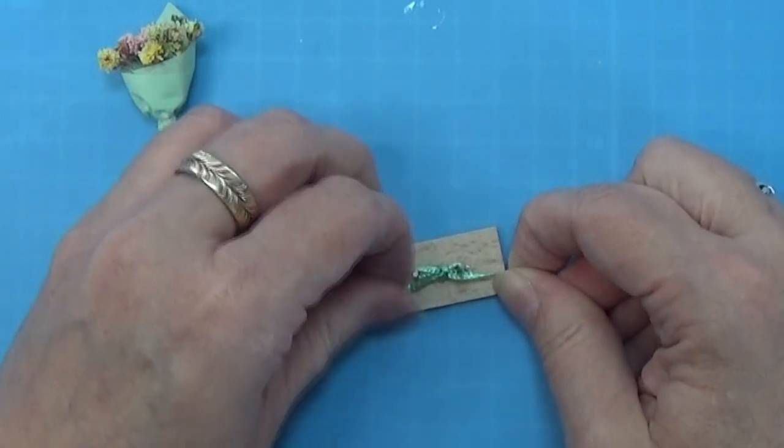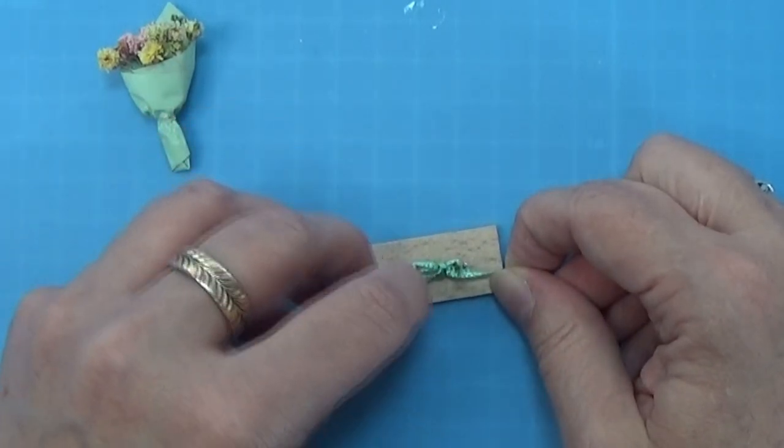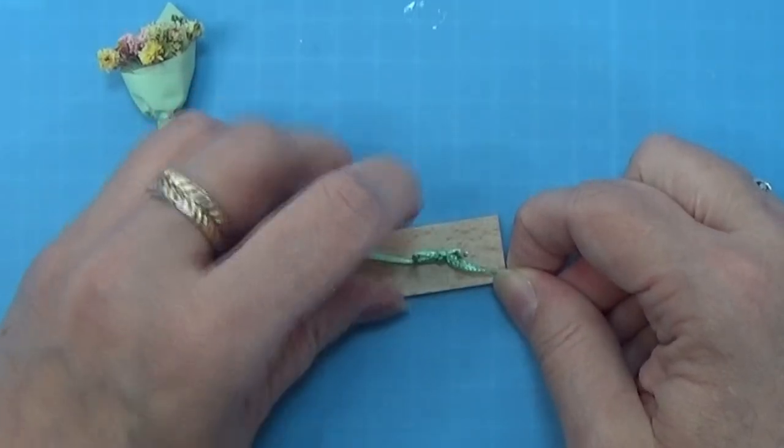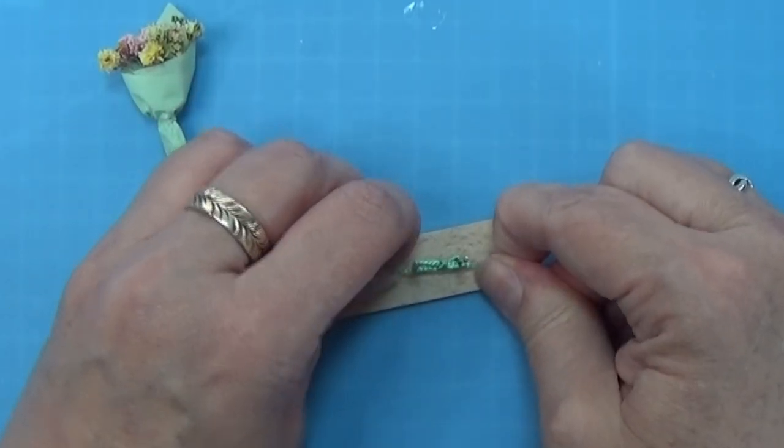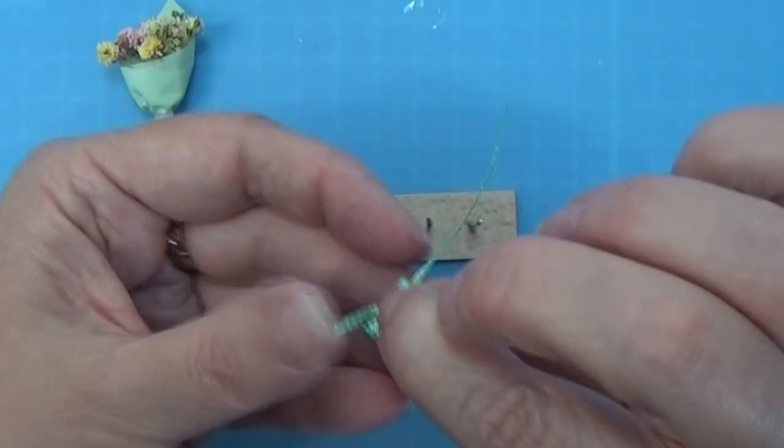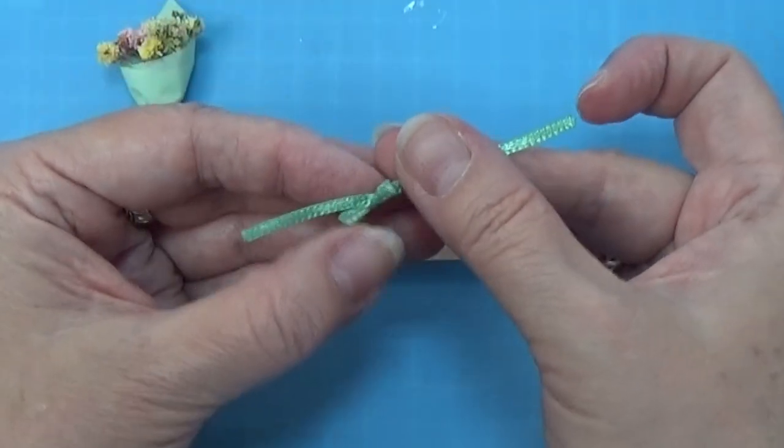Then you just pull as tight as you can, and there you have your little bow. There's nothing more to it. Then you just take it up and over the two nails and cut these side pieces here.